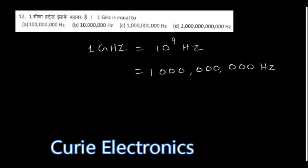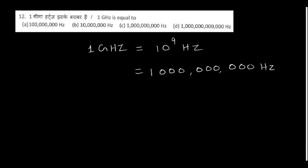One gigahertz equal to? One gigahertz means 10 to the power 9 hertz, so we can write it as one followed by nine zeros. Option C is the right answer.